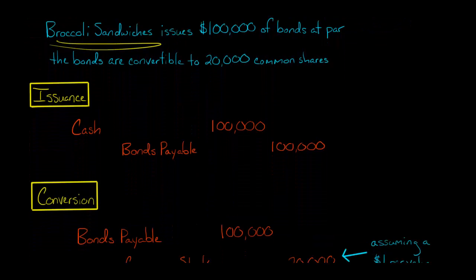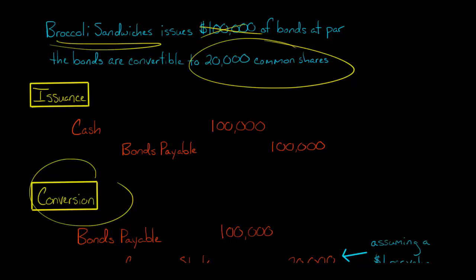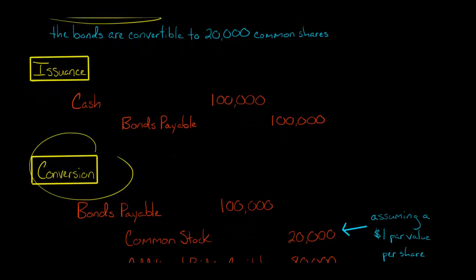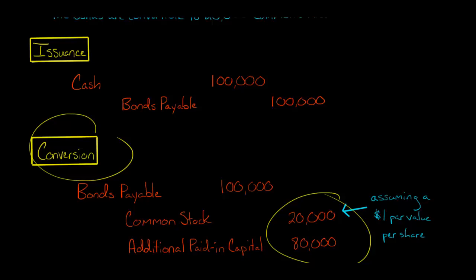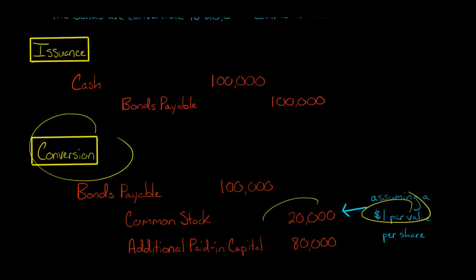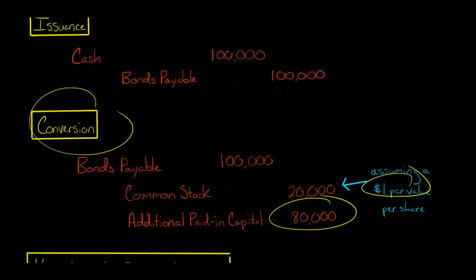Now if there's conversion — meaning the investors decide they don't want to be debt holders or creditors, they want to be common shareholders and will take 20,000 common shares instead — then we have to get the bond payable off the balance sheet. We debit bonds payable for $100,000 and credit equity for $100,000, split into two accounts: common stock and paid-in capital. Assuming a $1 par value per share with 20,000 shares, that's a $20,000 credit to common stock and an $80,000 credit to additional paid-in capital to make the entry balance.